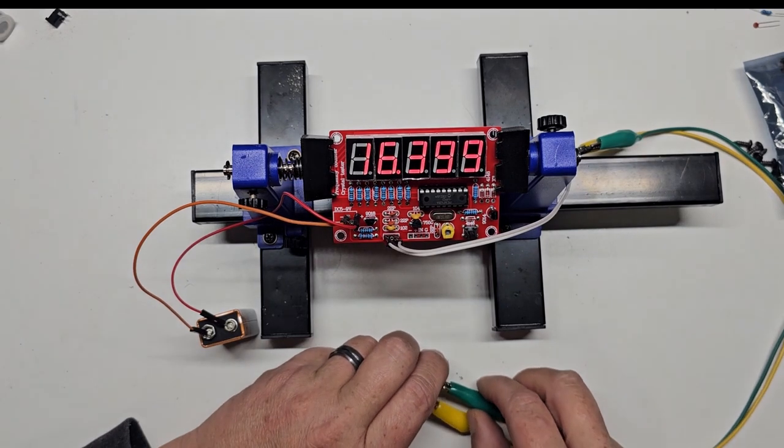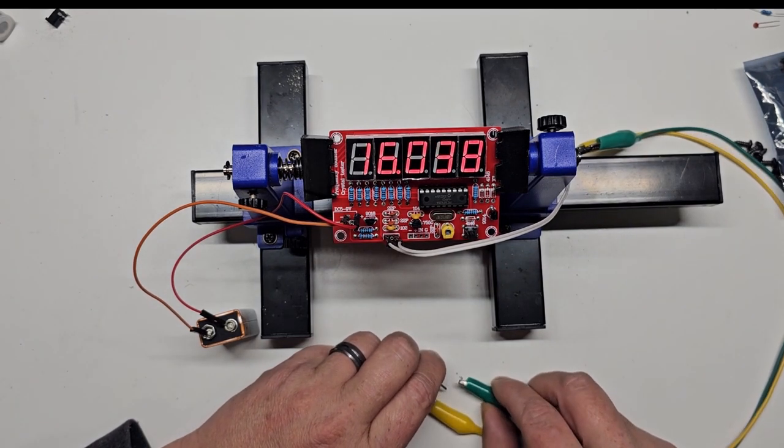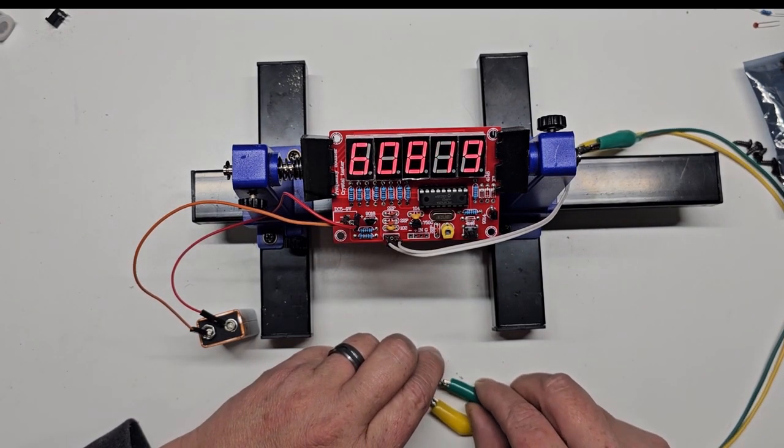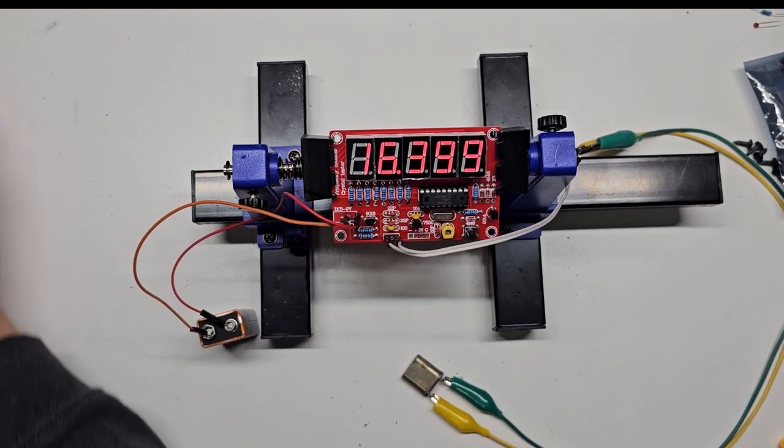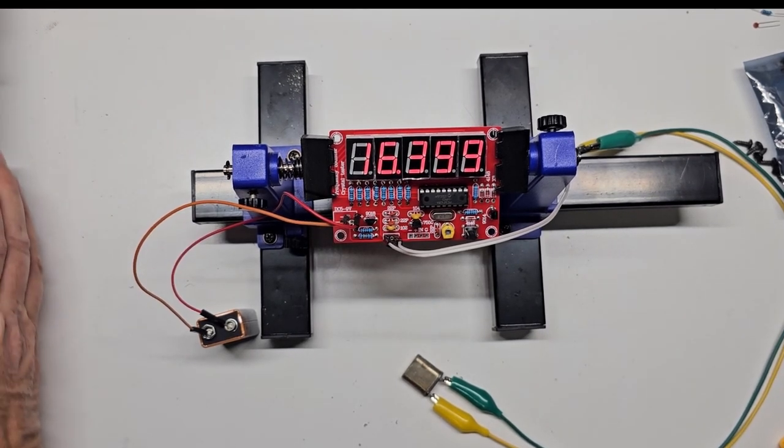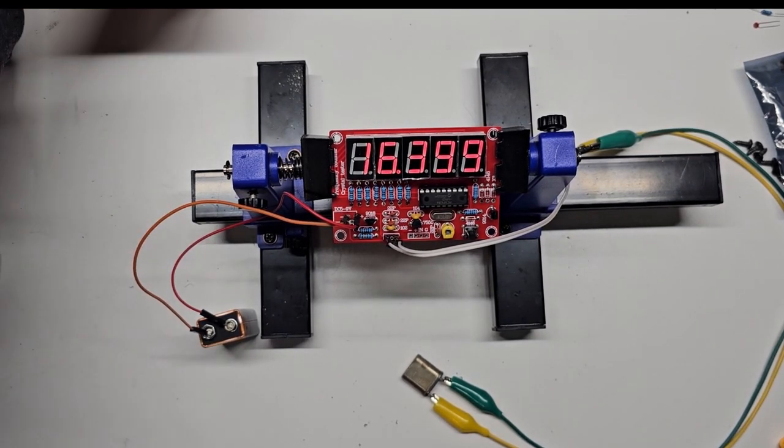To test operation I connect leads to the outer pins of the 3 pin connector to a known good crystal. I will use a 9 volt battery to apply power. While not 100% accurate this little device will show me approximate value and that the crystal will oscillate.